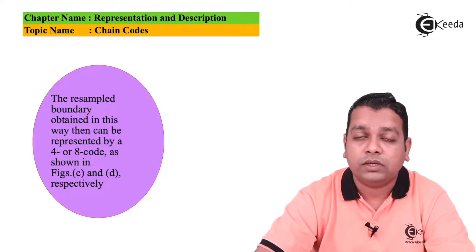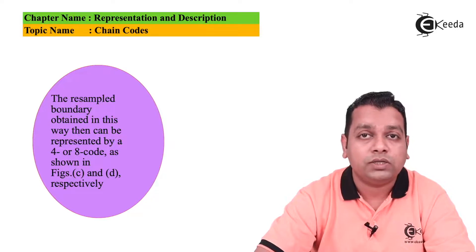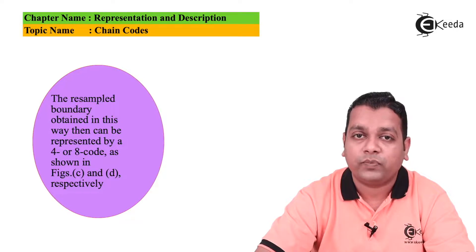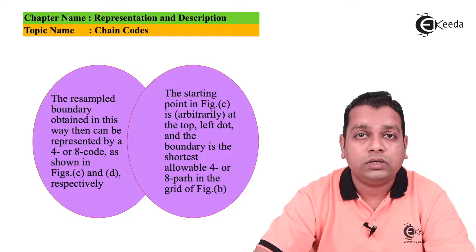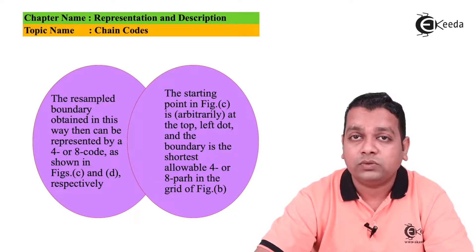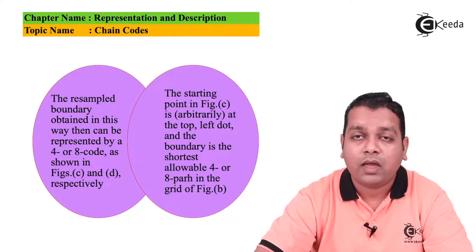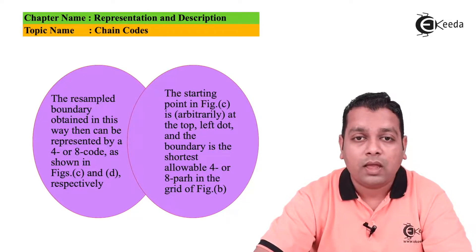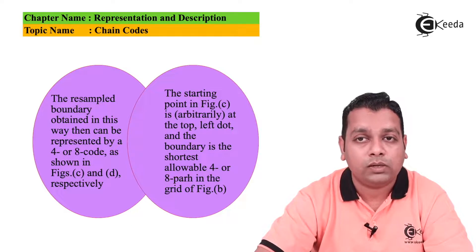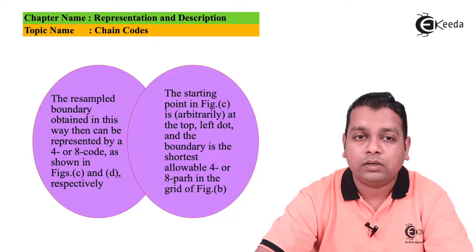can be represented by the 4 or 8 connectivity chain code as shown in the next figures, figure C and figure D respectively. The starting point in the next figure C is actually the arbitrary selection at the top left dot and the boundary is the shortest allowable 4 or 8 connectivity path in the grid of figure B.